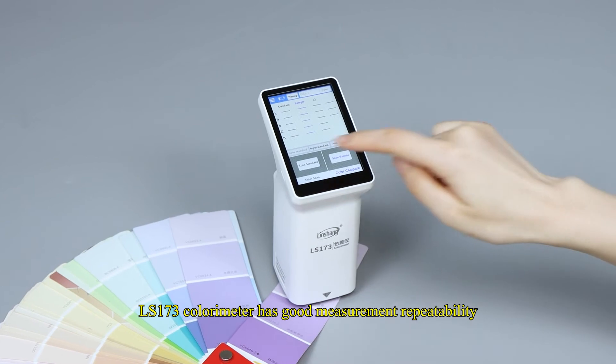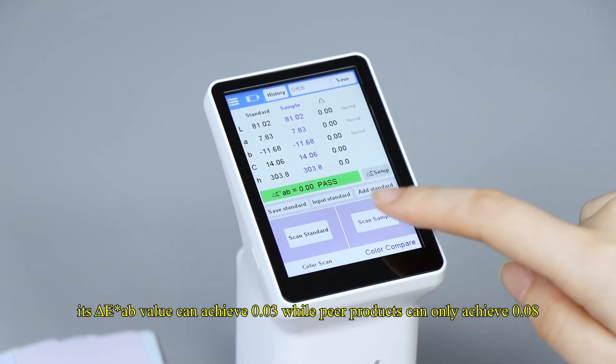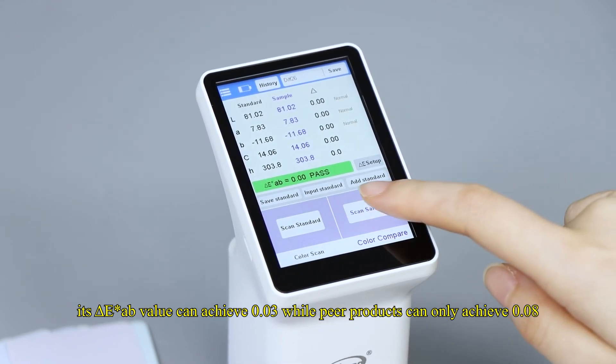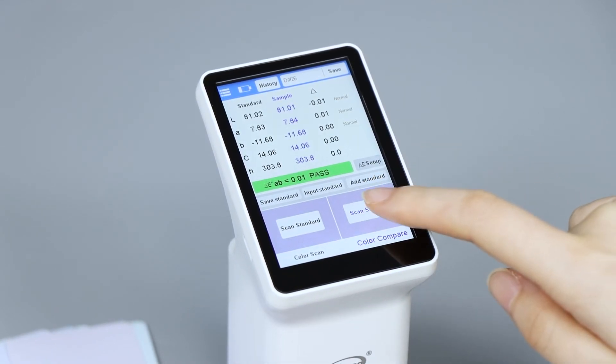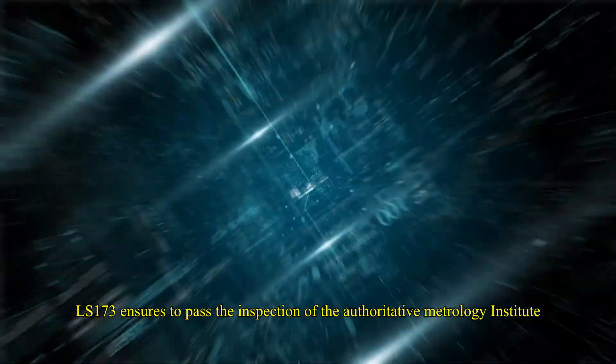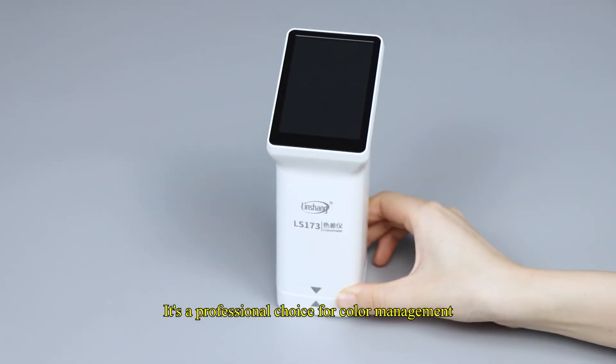LS173 colorimeter has good measurement repeatability. Its delta EAB value can achieve 0.03 while peer products can only achieve 0.08. LS173 ensures to pass the inspection of the authoritative metrology institute. It's a professional choice for color management.